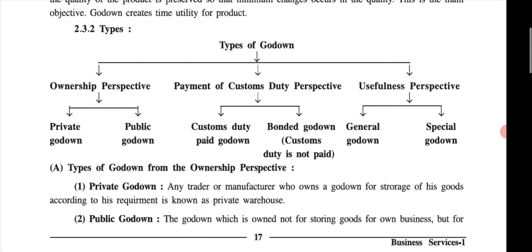So first we just read the chart and then come to the detailed explanation of the types of godown. There are three types based on ownership perspective, permit of custom duty perspective, and usefulness perspective. From the ownership perspective there are private godown and public godown.